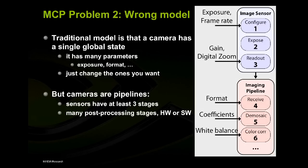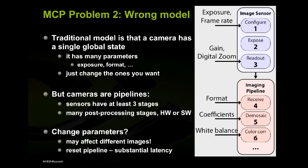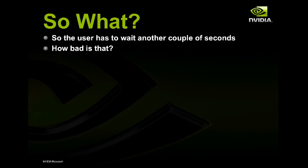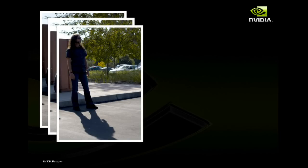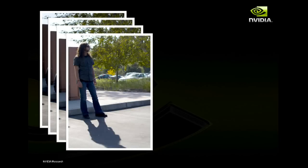Of course, another option is to reset the pipeline when you want to change any of these parameters. But that means you have to wait until all the previous images come out, then you can reset and restart. That costs time. And time is actually important when you're taking images of people — here's a kind of HDR stack of a person where something has gone wrong between images, and from that kind of input you get a badly blended output. That was probably not what you had in mind.